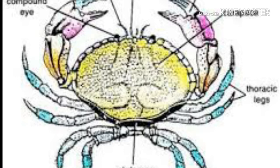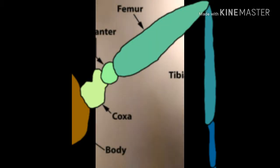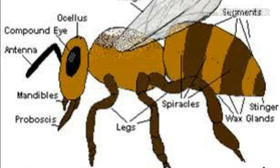Their success among invertebrates is due to the presence of cuticle, appendages, and wings. Economically important insects include honeybee Apis indica, Apis dorsata, silkworm Bombyx mori, and lac insects.